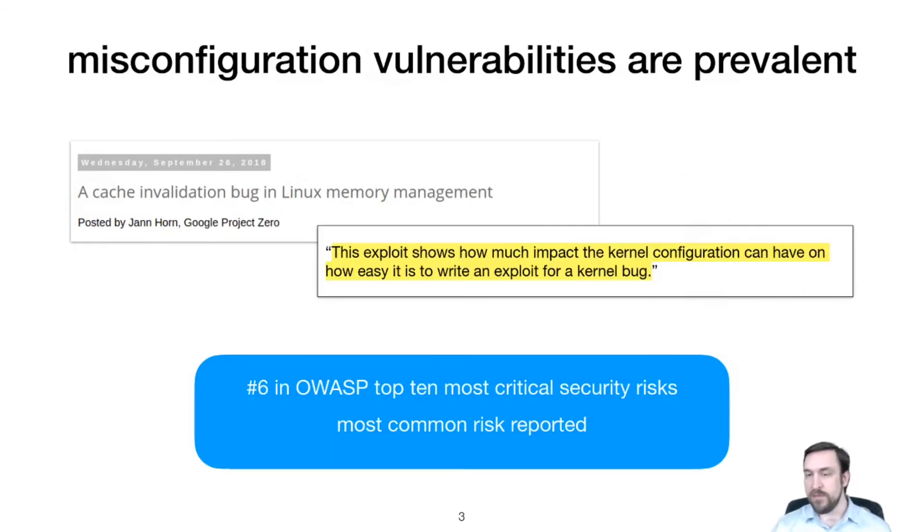But this configurability also has a downside. It introduces the potential for misconfiguration vulnerabilities, which happen when some combination of configuration options reveals a software bug or some unexpected combination of software components. In fact, the OWASP Foundation lists misconfiguration vulnerabilities among their top 10 most critical security risks.